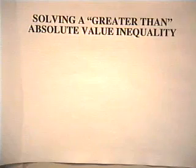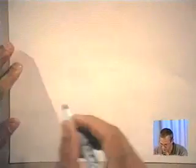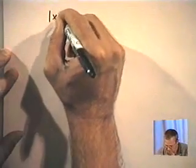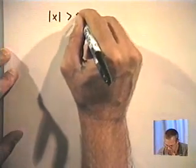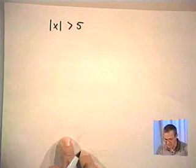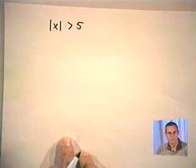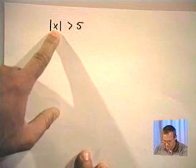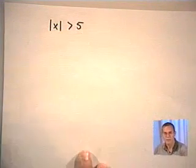Solving a greater than absolute value inequality. Let's start off by looking at a simple example of an absolute value inequality with a greater than symbol. How about the absolute value of x greater than 5? If you remember what absolute value means, it means the distance away from 0. So what this example says is the distance away from 0 must be more than 5 units.